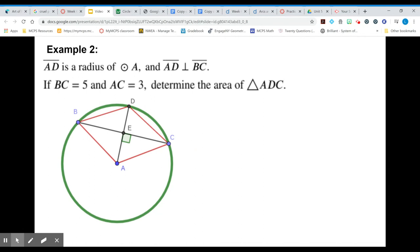Our last practice problem: AD is a radius and it's perpendicular to BC. BC equals 5 and AC equals 3 and we're asked to determine the area of this little triangle. Remember that the area of a triangle is 1/2 base times height.